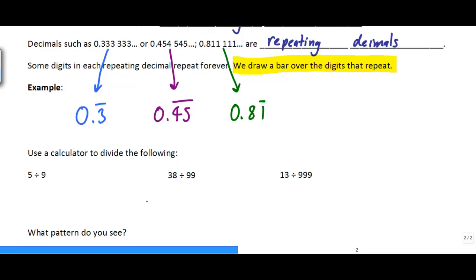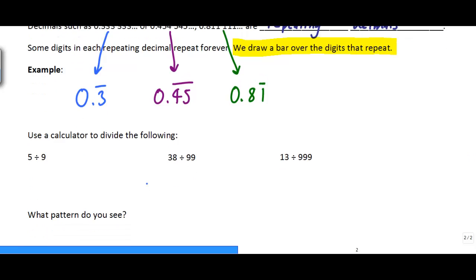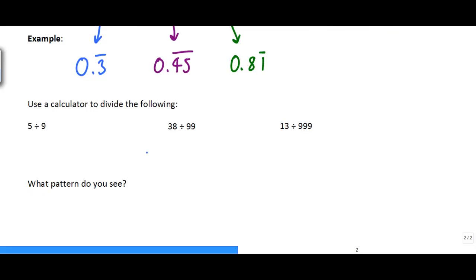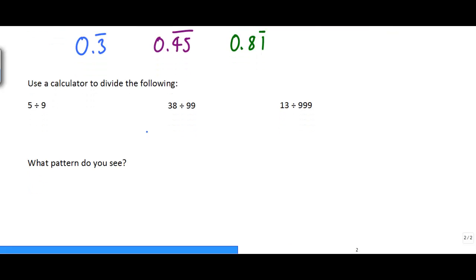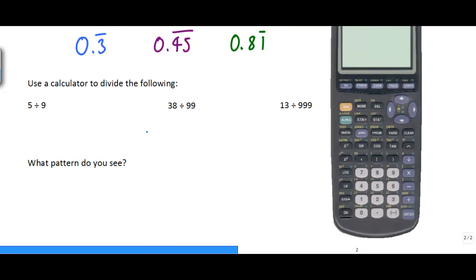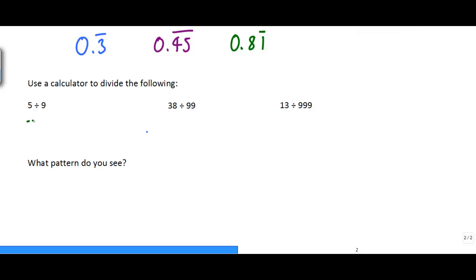So we're going to do a quick comparison here and see if we can come up with some rules for helping us figure out repeating decimal numbers. We're going to use a calculator for the next step and we're going to divide the following things. So the first thing we want to divide is 5 divided by 9, and that is 0.5555555. So we can see that that's actually the same as 0.5 repeating.